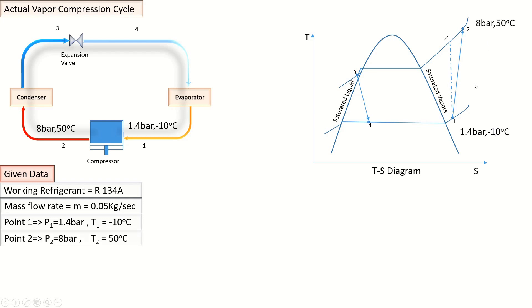At Point 2, which is after the compression which is not isentropic compression because this is actual vapor compression cycle, our pressure is P₂ = 8 bar and temperature is T₂ = 50°C.